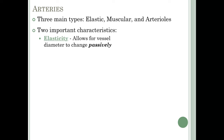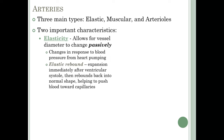The first characteristic is elasticity, which allows vessel diameter to change passively in response to blood pressure from the heart pumping. We mentioned elastic rebound in Chapter 20: with elastic rebound, you have expansion of an artery immediately after ventricular systole, and then the artery rebounds back to its normal shape. This helps push blood toward the capillaries and, as we saw in Chapter 20, into the coronary arteries.